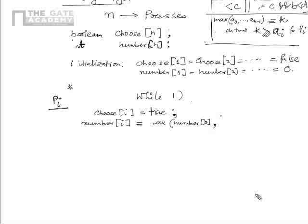Each process is assigned a number and a choose variable. When a process enters the system and requests the ready queue, a number is assigned to it via the number variable. The choose variable indicates whether the process wishes to enter the critical section, while the number indicates when the process requests entry relative to other processes.